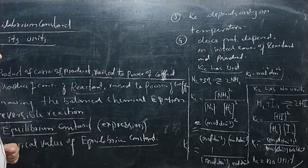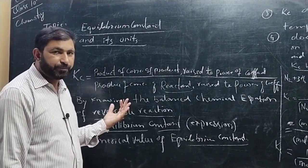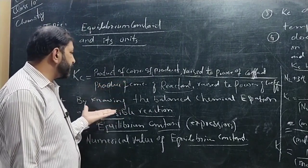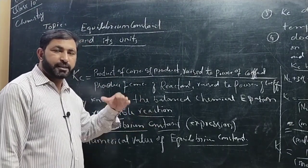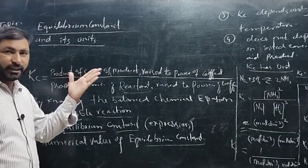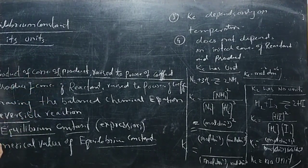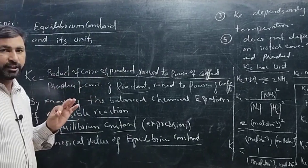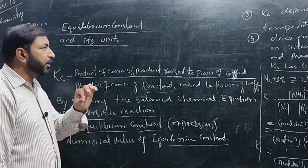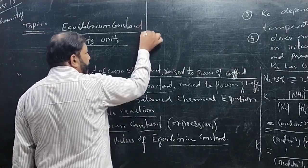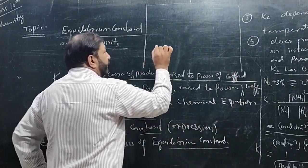So students, in this topic of equilibrium constant, we first learned the definition, then wrote the formula. Through several points, we discussed how to write the equilibrium constant expression, how to calculate its numerical value, what it depends on and what it does not depend on, and we also calculated and found the units of Kc.